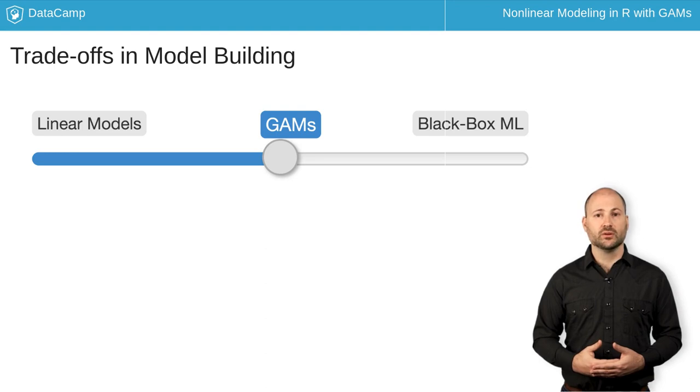GAMs offer a middle ground. They can be fit to complex, non-linear relationships and make good predictions in these cases. But we are still able to do inferential statistics and understand and explain the underlying structure of our models and why they make predictions that they do.